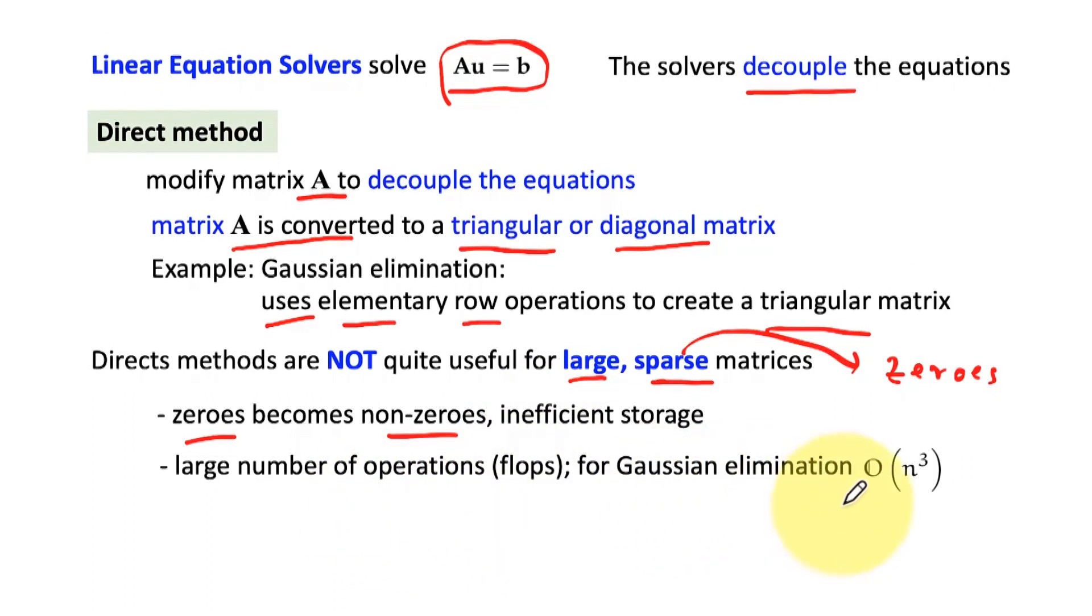Usually Gaussian elimination takes operation number, operation count of the order of n^3, where this n is the size of the vector u, or the size of the matrix is n by n. When the matrix size becomes large, it may be several thousands or sometimes tens of thousands or even millions, then the number of operations becomes very large and we have to find some other way to do it.